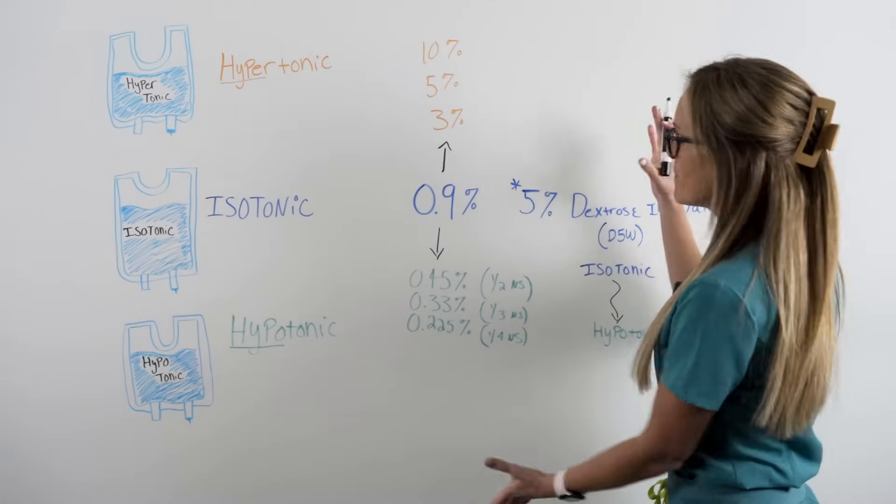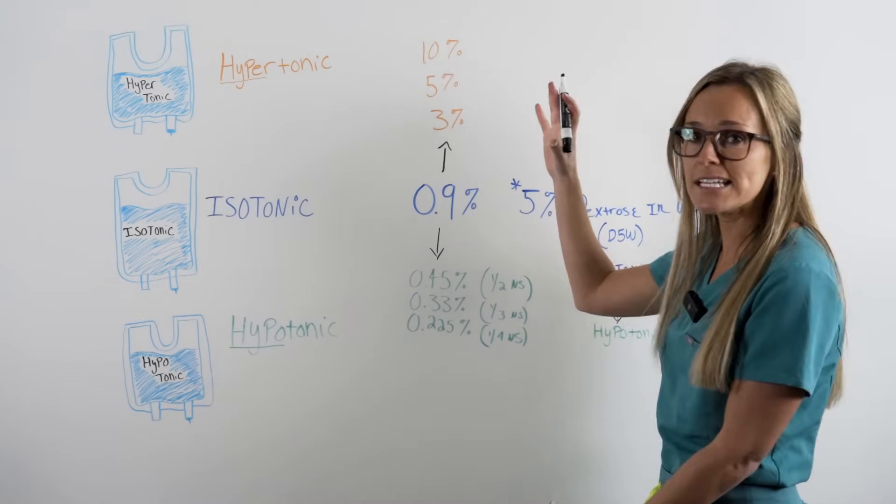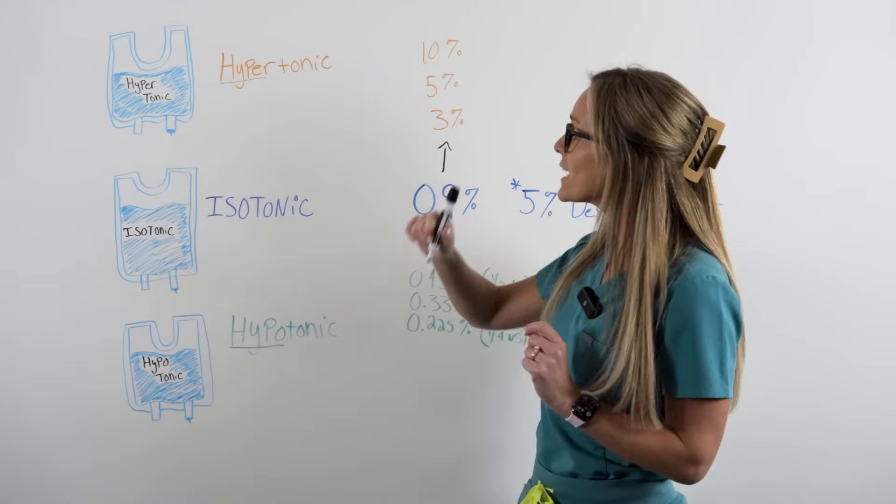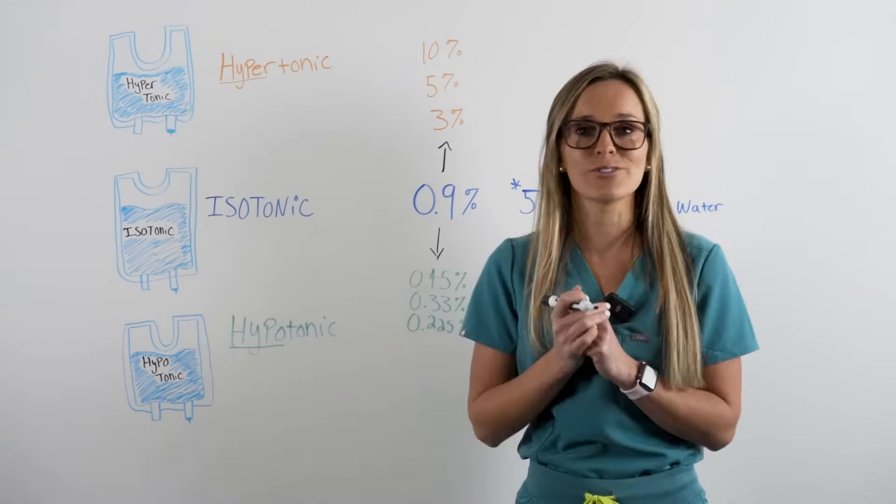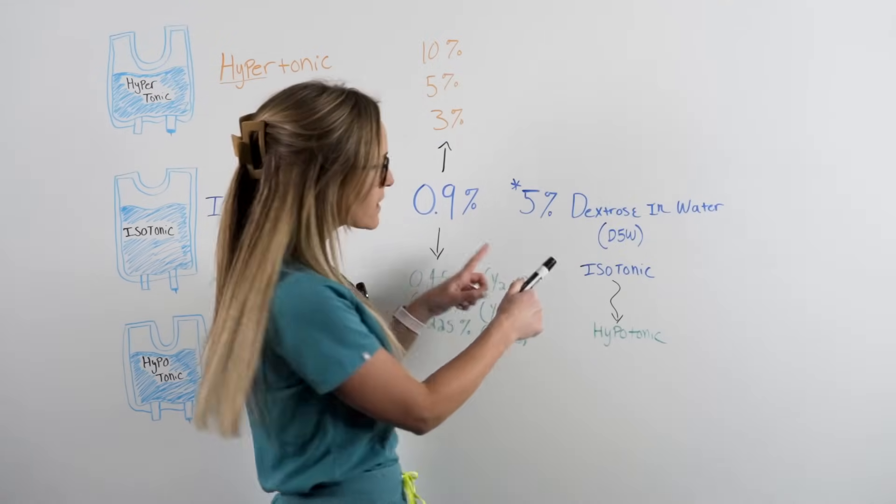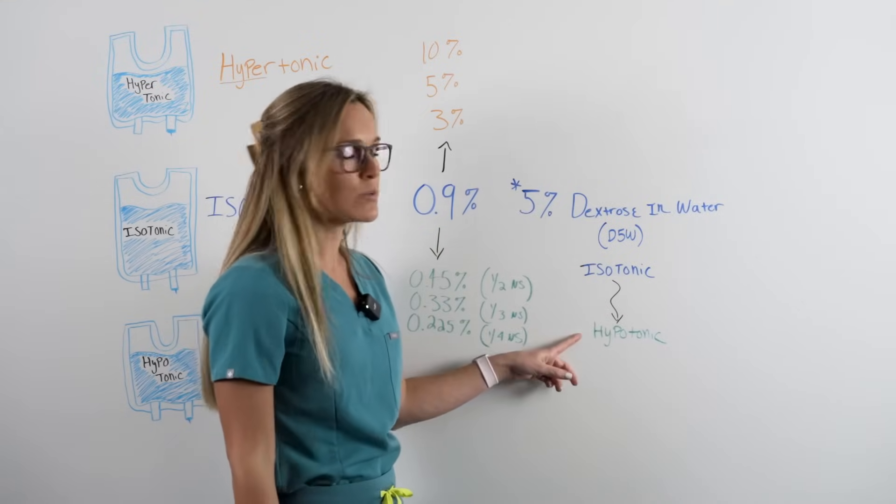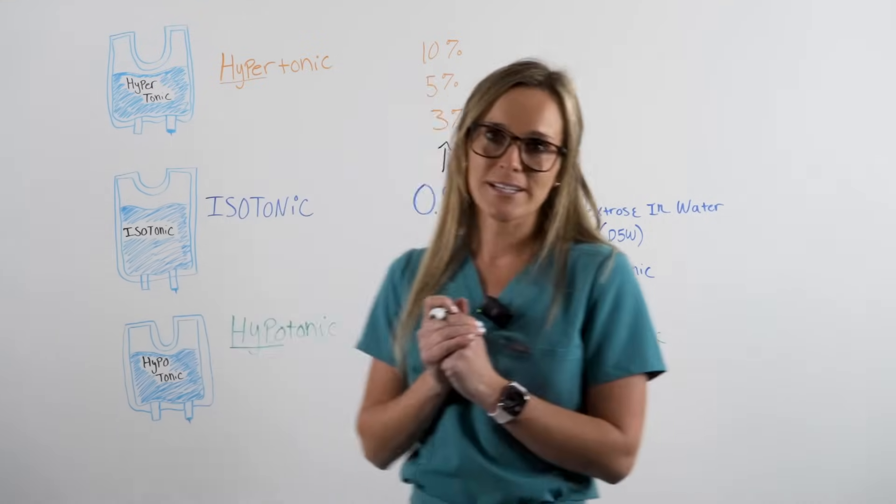You can see that when you remember this chart and really understand it, you pretty much can take any bag of fluids and recognize if it's a hypertonic, isotonic, or hypotonic solution. But of course, remember that one exception of D5W, which starts as isotonic and changes to hypotonic once it's in the body.